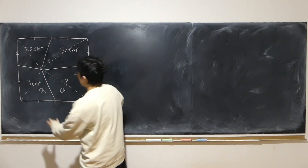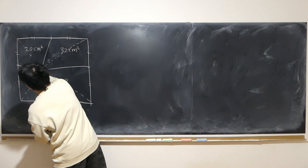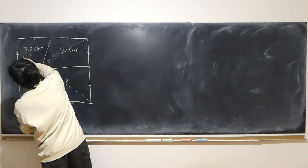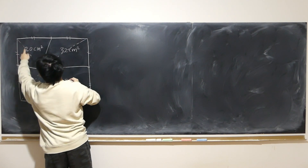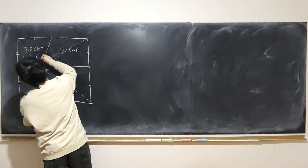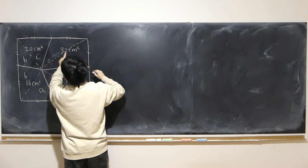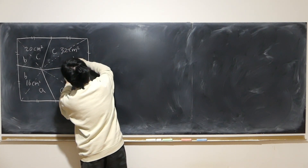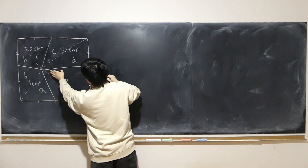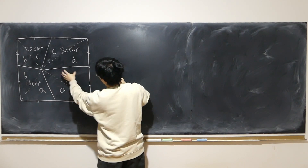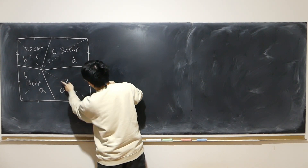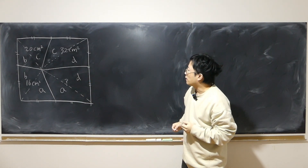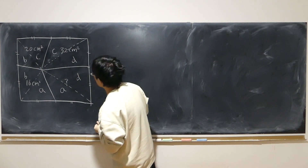Likewise, this triangle area is B, and this triangle area is also B. This triangle area is C, and this triangle area is also C for the same reason. This triangle area is D, and since this is the middle point, this triangle area is also D. So that gives us four unknowns.